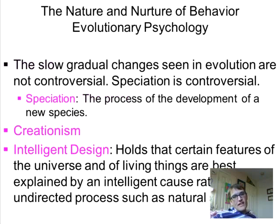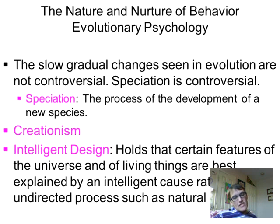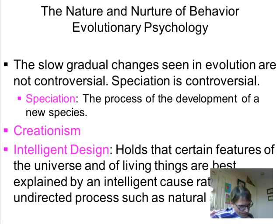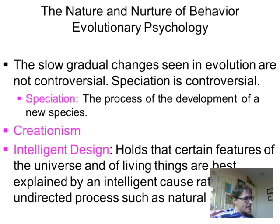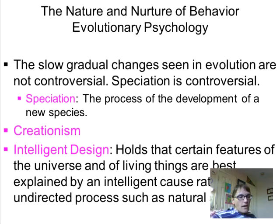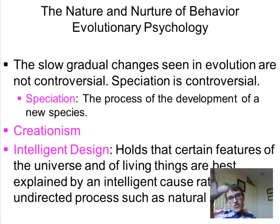The slow gradual changes seen in evolution are not that controversial. Some people say evolution is a fact, some say it's a theory — the answer is both. Evolution is a fact in the sense that animals do change across time — that's literally the definition: the change in average characteristics of a species across time. You just have to dig up fossils. They used to be short-necked giraffes and now they're long-necked giraffes. Evolution is a theory as a question of what force is driving that selection. One explanation is natural selection, but there's also sexual selection.